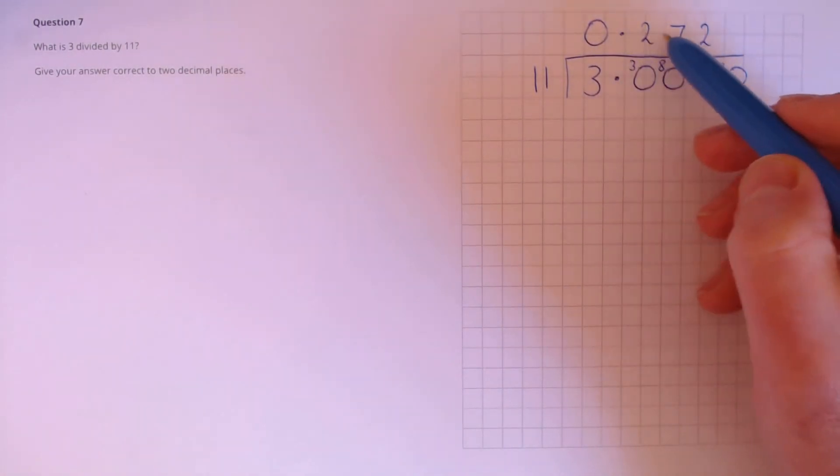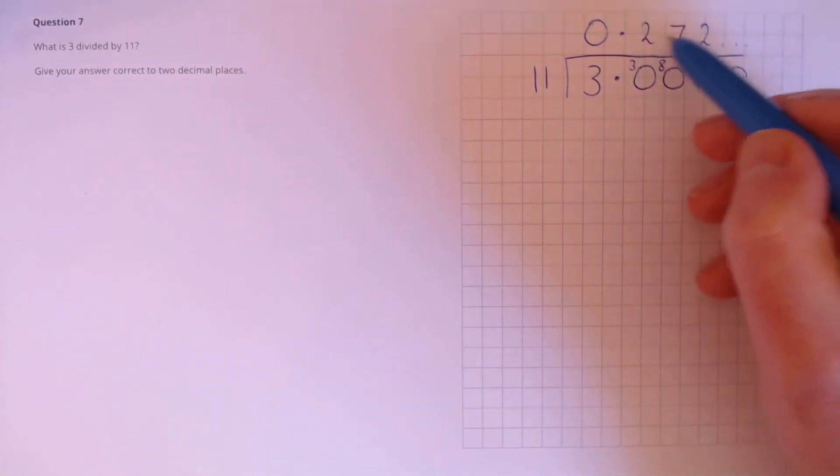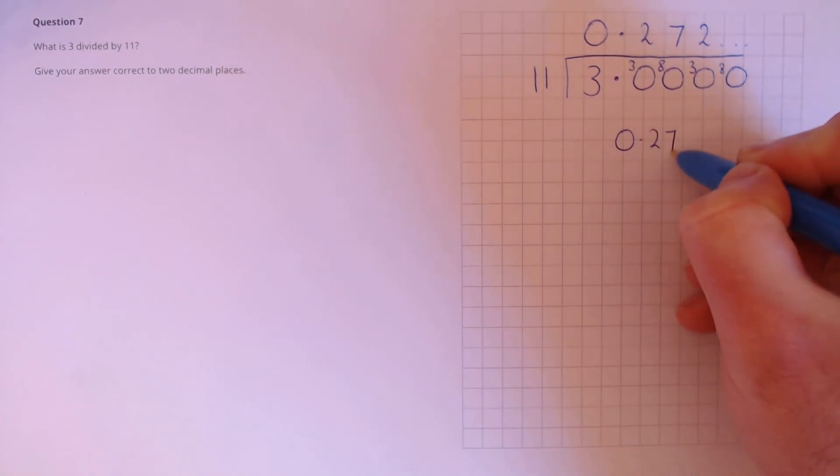So, our answer is 0.272, and then this will continue, but we don't need any more. 0.272, which are two decimal places, is just 0.27.